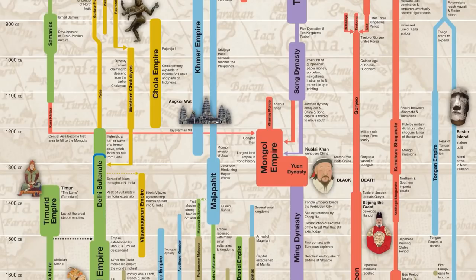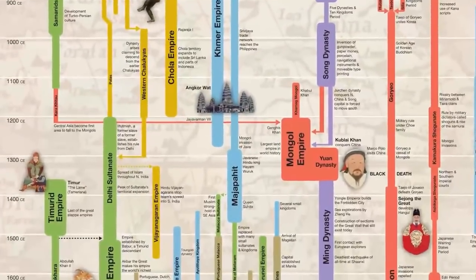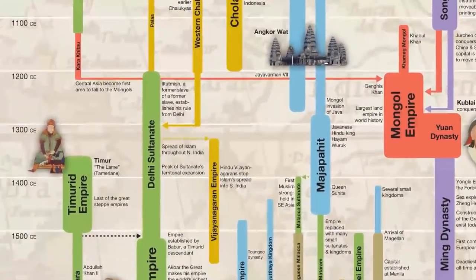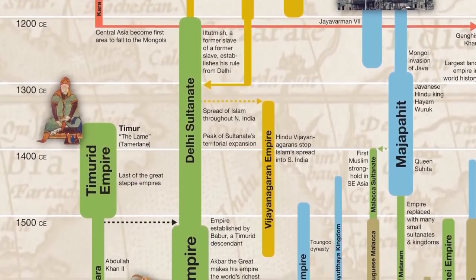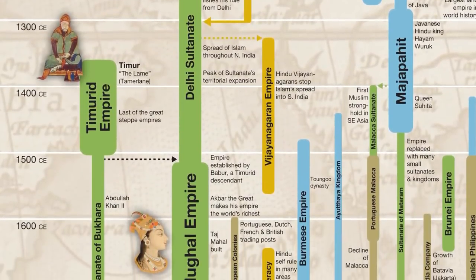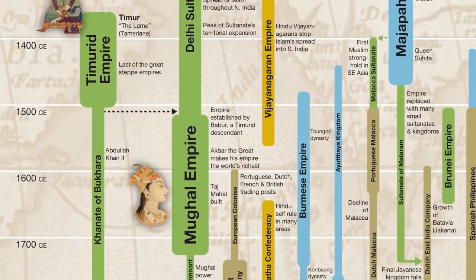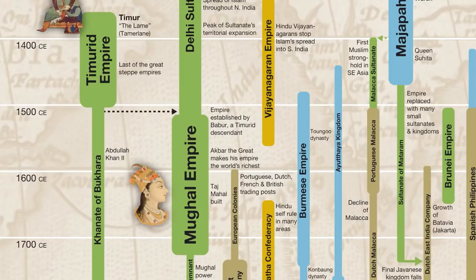After Genghis Khan, the next greatest conqueror to come from the Asian steppes was probably Timur. His empire dominated most of Western Asia during the 1400s, but perhaps even more importantly, one of his descendants ended up conquering the Delhi Sultanate in the year 1526, establishing the Mughal Empire, which at its greatest extent controlled most of India. Under its most famous emperor Akbar the Great, the Mughal Empire became the richest empire on earth, and his grandson would go on to build the famous Taj Mahal.